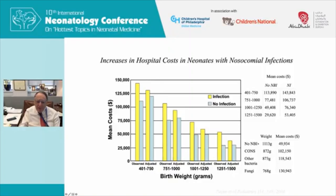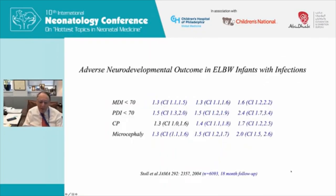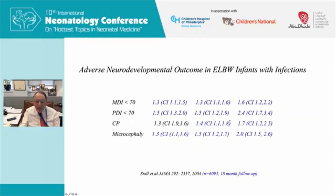At each birth weight grouping the difference is about thirty thousand dollars — babies with nosocomial infection cost about thirty thousand dollars more than babies without. It also varied by pathogen: no infection had a mean cost of about fifty thousand dollars; coagulase-negative Staphylococcus added about fifty thousand dollars; other gram-positive and gram-negative bacteria were a little higher; and fungi were the most expensive. Data from Barbara Stoll for the neonatal research network also showed that outcomes — mental developmental index less than 70, psychomotor developmental index less than 70, cerebral palsy, and microcephaly — are all significantly more common in babies with healthcare-associated infection.